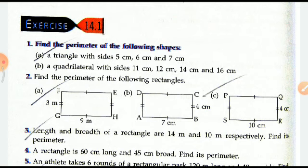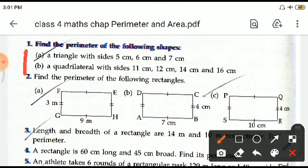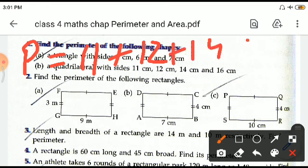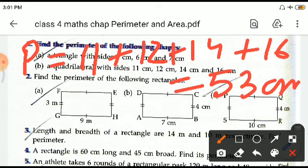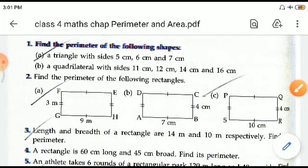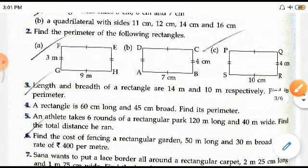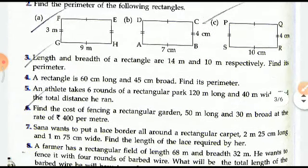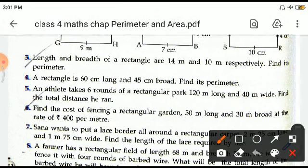Now let us do some questions here. Perimeter of the following shapes. Let us do the B part which is a quadrilateral with sides 11, 12, 14, and 16. So we'll be writing it like this: the perimeter will be 11 plus 12 plus 14 plus 16, which will be equal to 53 centimeters. Now for a rectangle it is 14 and 10 meters respectively. Find its perimeter. So here the P will be 2 into bracket.